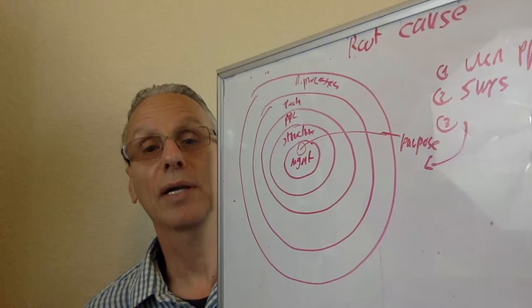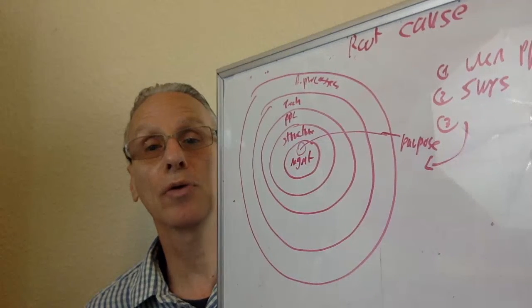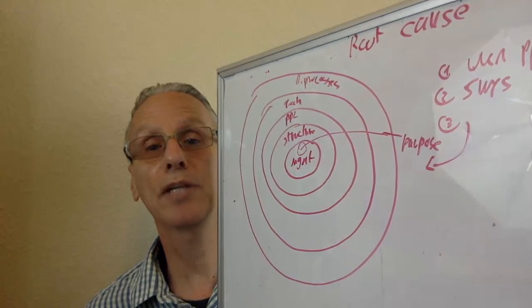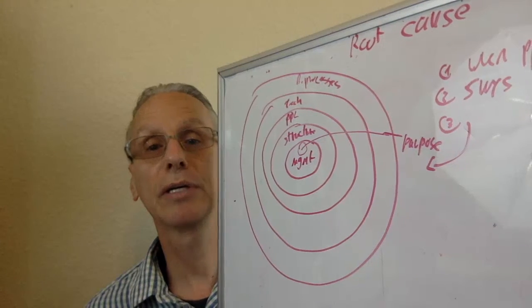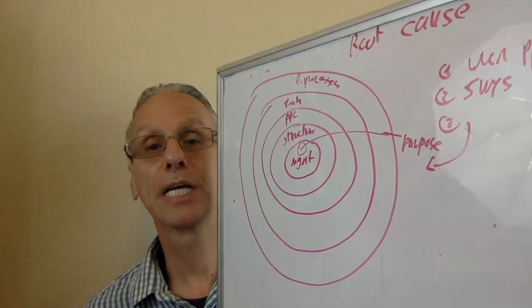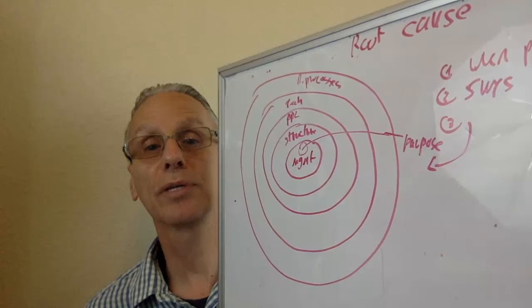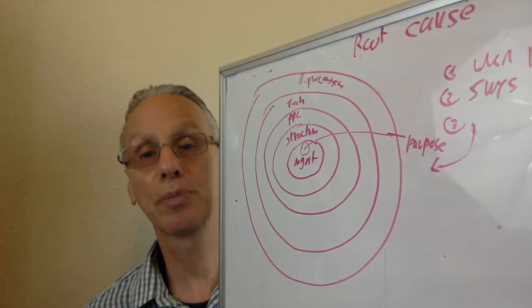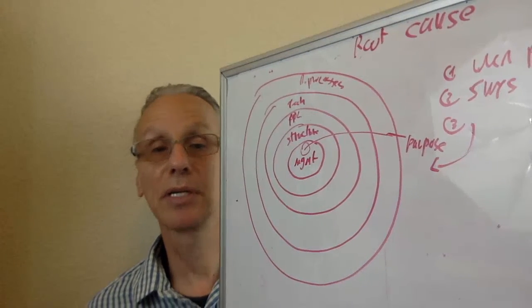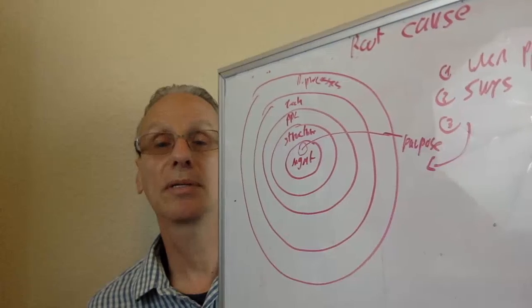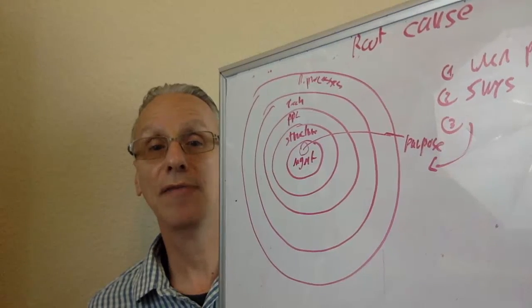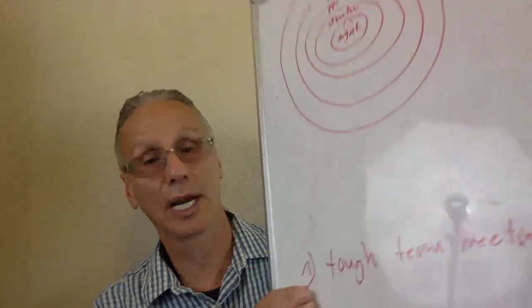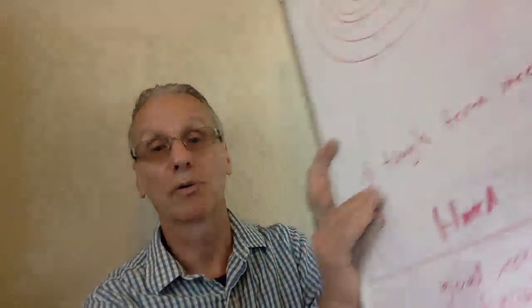If I have a problem with people, I'll go to the management layer. And if I have a problem with structure, I'll go all the way down to purpose. It's a simple model, and I found it much more beneficial and helpful rather than just doing the five whys.